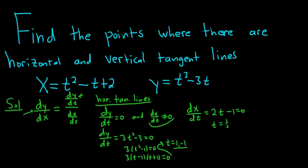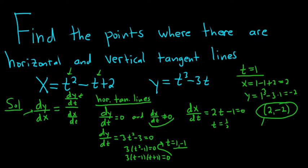To actually find the points, what we do is we plug these back into x and y. So when t = 1, we get x = 1 - 1 + 2, so we get 0 + 2, so we just get 2. And then when t is 1, the y value would be 1³ - 3(1), so just negative 2. So our first horizontal tangent line point is (2, -2). That's the point where we have a horizontal tangent line.